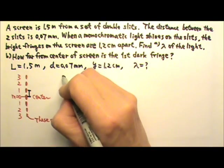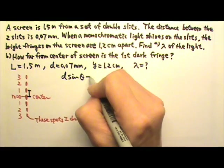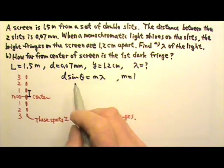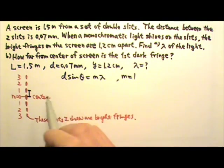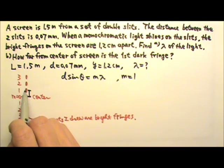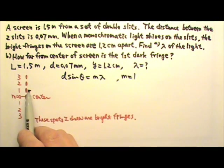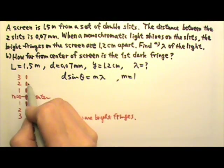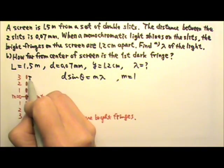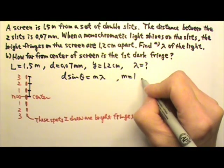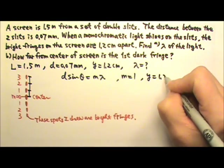I can use D sine theta equals M lambda, with M equals 1. In that case, the theta or Y we find will correspond to the M equals 1, the first order fringe, which means I get the Y from the first order fringe to the center of the screen — that would be the 1.2 centimeters. Because all the fringes are about equal distance apart, M equals 1 gives us Y equals 1.2 centimeters.